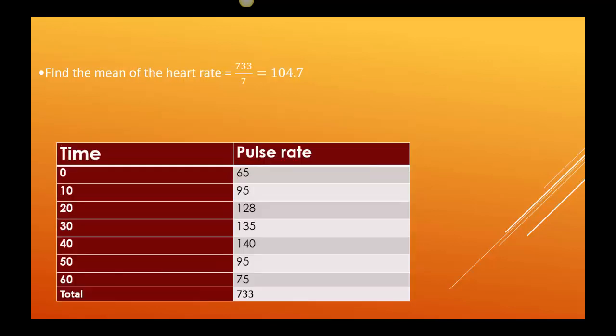The mean. So if we were only looking at every 10 minutes and we wanted to know the mean of the heart rate over the workout time, you would add up. So the 65, 95, 128, 135, 140, 95, and 75, and it says 733 because we took seven different times we took the pulse rate, so I have seven readings. So I have 733 over seven, gave me 104.7.